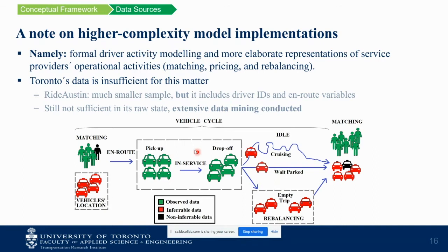The Ride Austin dataset requires extensive data mining. From trip-based data you get pickups, travel times, locations, and drop-offs, but you're missing a lot. The en-route part — from the driver starting the trip to go pick up the user — is unknown in Toronto data but inferable in Austin. We also don't know anything about the idling period between consecutive trips. There is data that's not inferable even with Ride Austin: users who never got a trip aren't in the records, and we don't know what drivers did before their first trip or how long they waited.